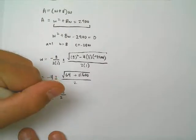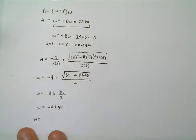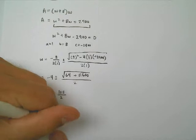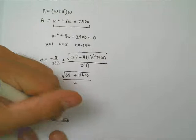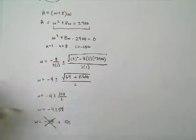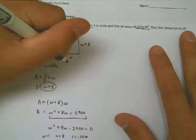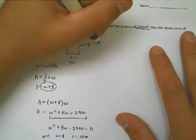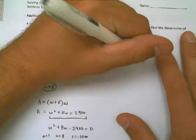So, that means W can equal two things. Negative 4 minus 54, it could be negative 58. Or, negative 4 plus 54 would be 50. Because it wouldn't really make a whole lot of sense to have a width of negative 58 feet, we're going to go ahead and knock that option out. That means W has to be 50 feet. So, now I can go back up to my picture, understanding that W is 50. That means that the length must have been 58. My answer is 50 feet by 58 feet. There are the dimensions of my lot.